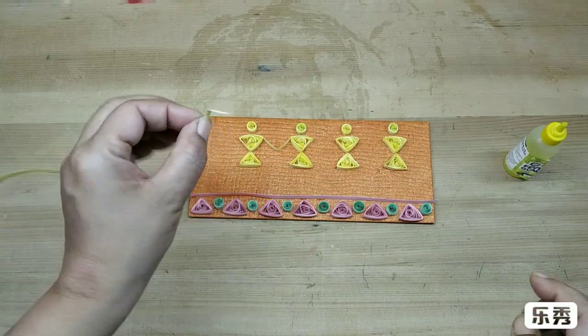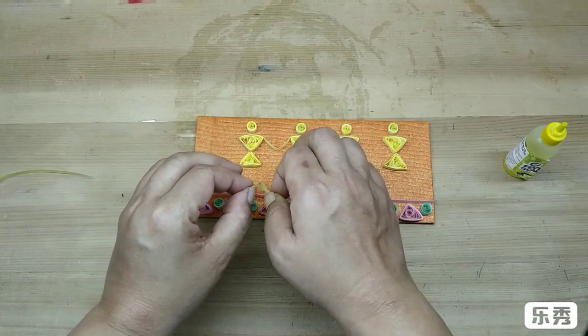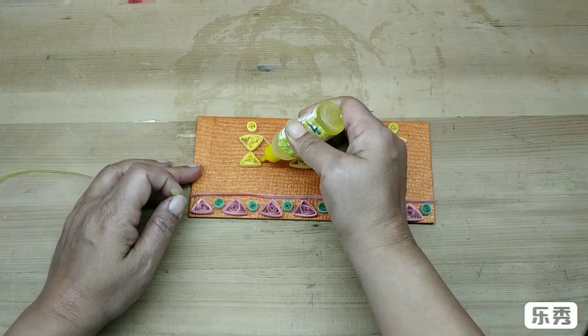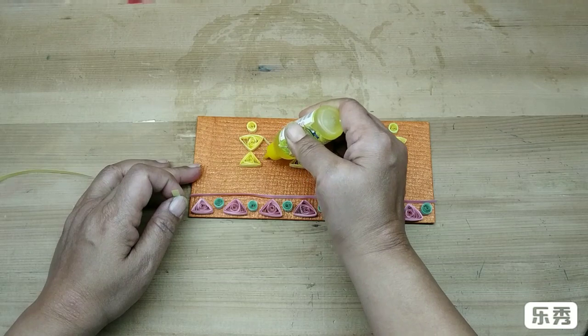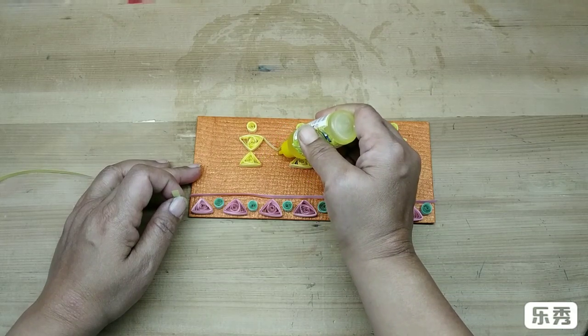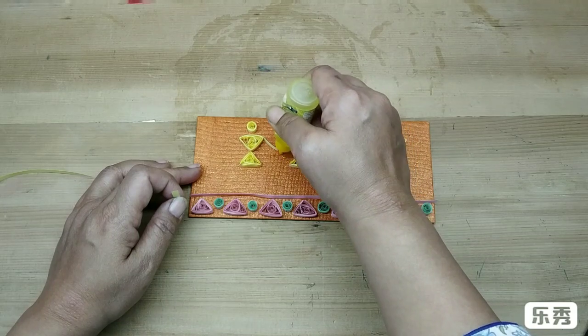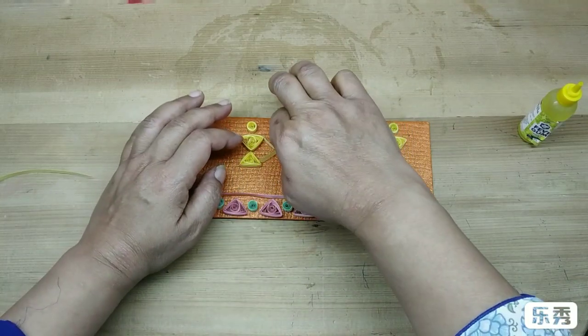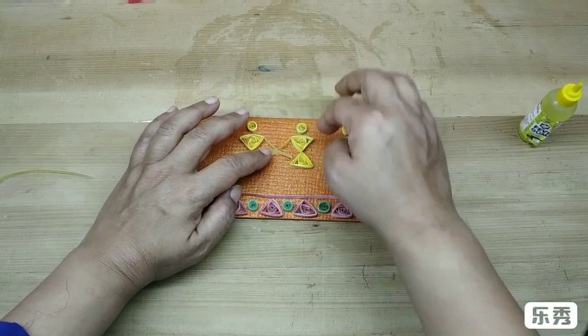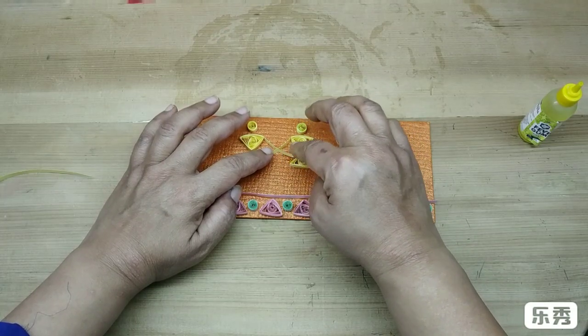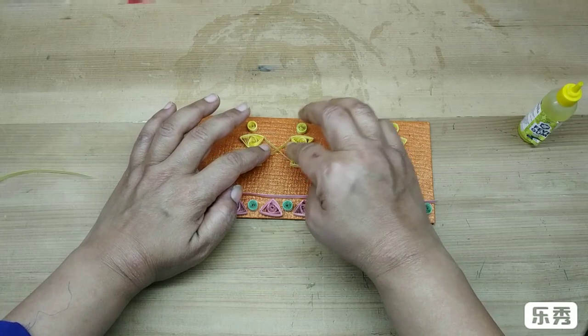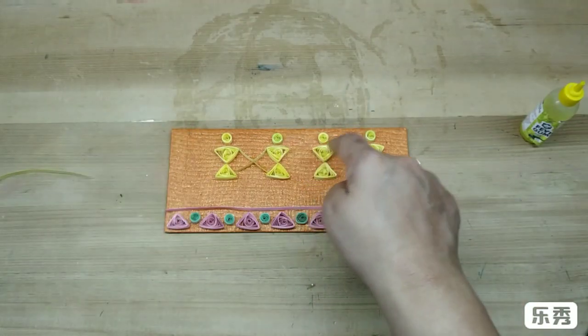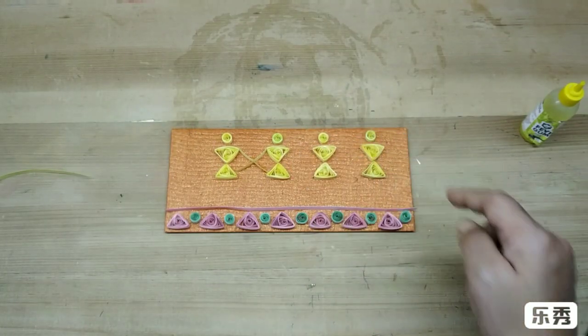Now I have cut another piece and folded it. So this I am going to stick on the lower side. So just apply glue. Stick it like this. So I am going to make all the arms between the other figures.